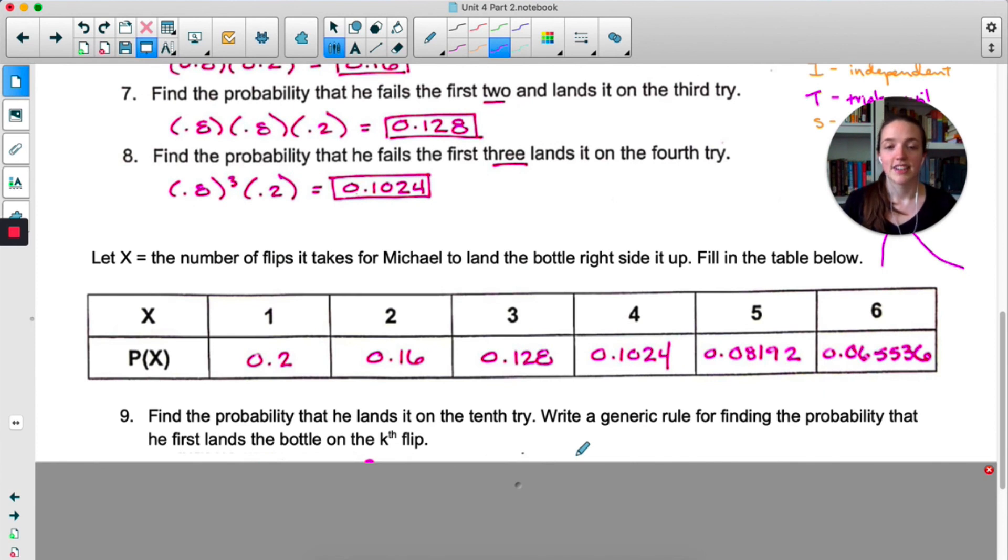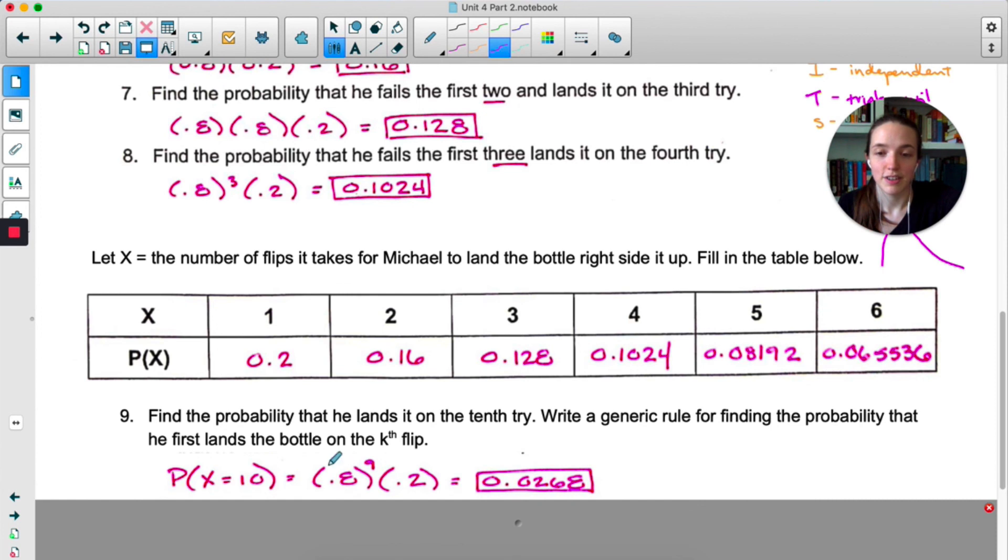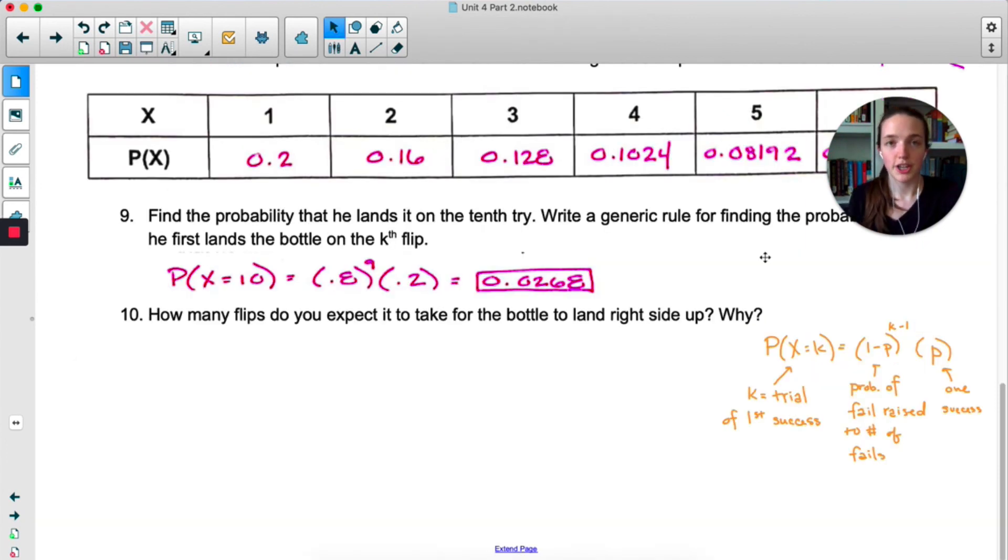The probability that he lands it on the 10th try. We already kind of saw this pattern, but basically what we have to do is the probability of failure raised to the number of failures and then just a single success. So there's a very small chance, 2% chance, that he lands it on the 10th try. For a generic formula, here's what I wrote. Probability that X equals K. In this case, K is the trial of the first success. It's not the number of successes. It's the trial where we first see success. We're doing probability of failure raised to the number of failures, which is just K minus 1, times the probability of a single success.